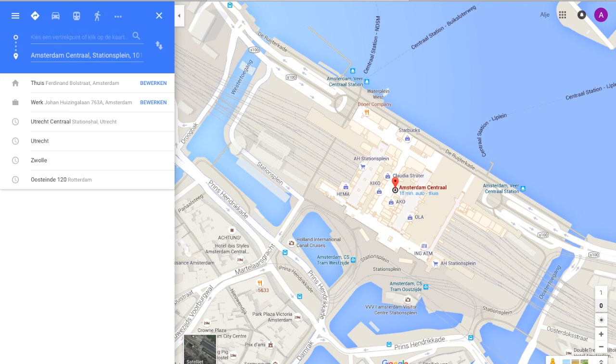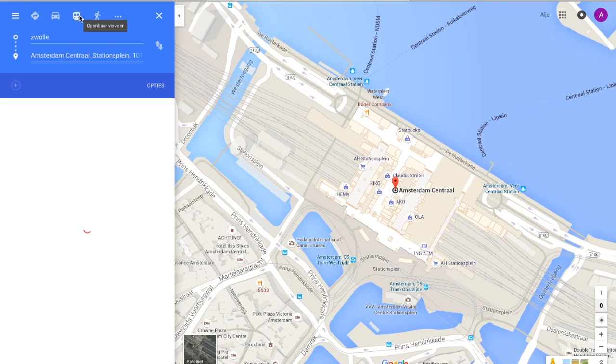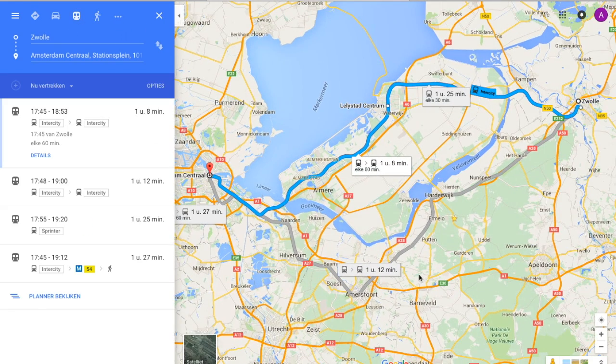One of the ways the Dutch railway tried to lower the eigenvector centrality score of Utrecht was by adding an additional connection between Amsterdam and Zwolle, evening out the scores.